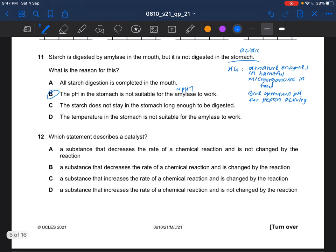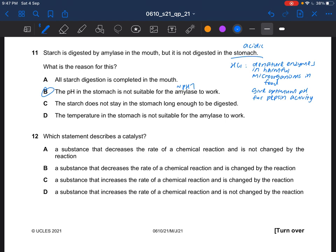Next question. Which statement describes a catalyst? A catalyst would speed up the rate of reaction. So it can't be A, it can't be B. And it is also not changed by the reaction. So the answer for question 12 would be D.